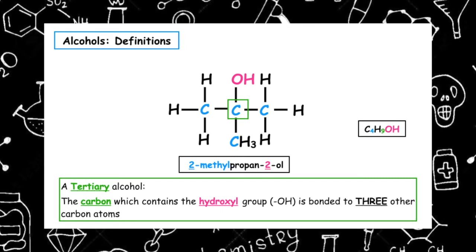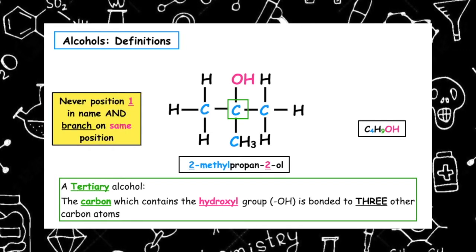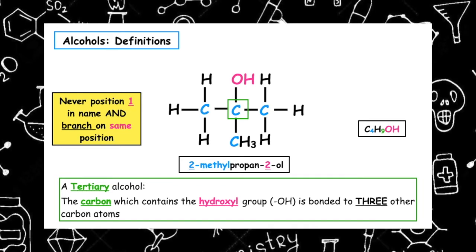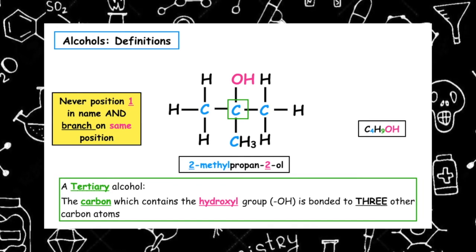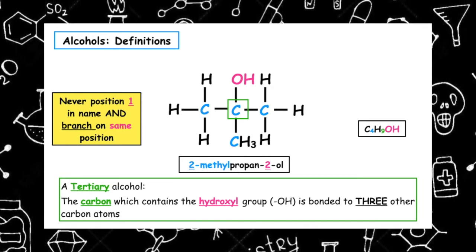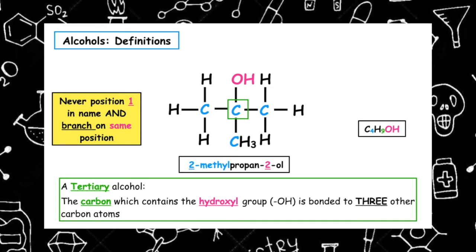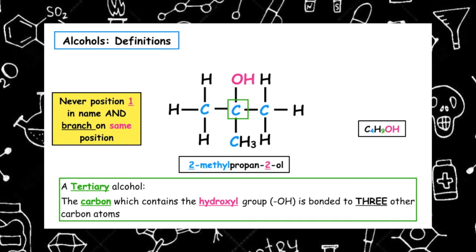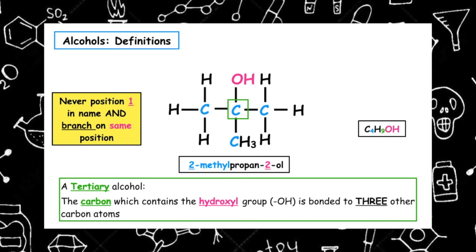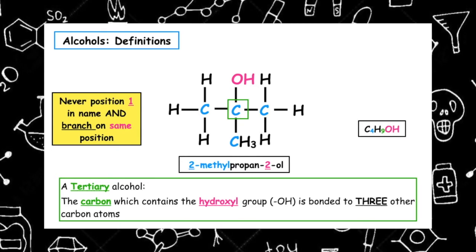To classify an alcohol from its name, we need to know that the hydroxyl group will never be on position one, but this time it must have a branch which is on the same position as the hydroxyl group. We can see here the hydroxyl group is on position two and the methyl branch is also on position two.